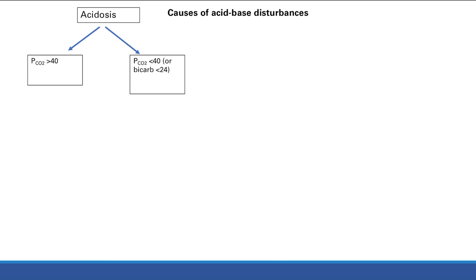Using this technique we can identify the problems. If we have acidosis, the pH is less than 7.4. Next, look at the CO2 — is it greater than or less than 40? If pH is low and CO2 is actually up — greater than 40 — they're going in opposite directions, so this is a respiratory acidosis.